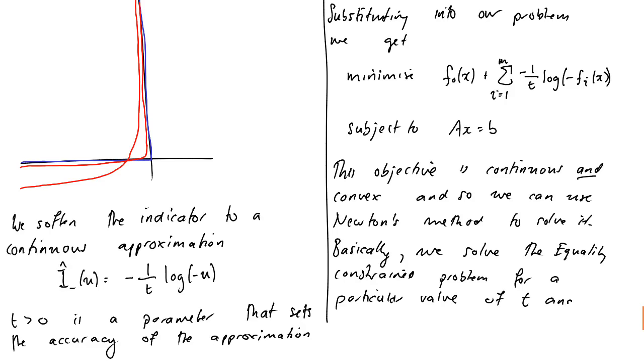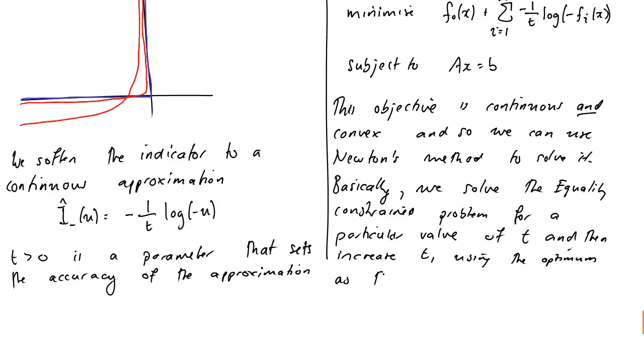Okay, and then increase t using the optimum as the start point for the next iteration. Okay, so you set t to be relatively small, you solve the approximate problem, that will give you an x that is an approximation of your actual solution. You then increase t by some amount, and do it again. Every time you do that, you get closer and closer to solving your true problem. And because you're always starting nearby for the Newton's method, it's always, so long as you choose your values of t sensibly, it will always converge.